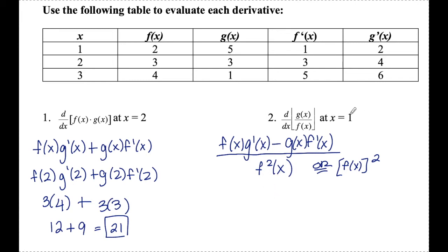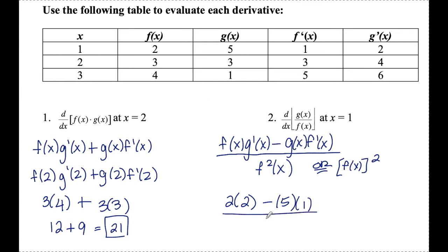Since I'm looking for these at x equals 1, I'm plugging 1 in for x everywhere. f of 1 is 2, g prime of 1 is also 2, g of 1 is 5, f prime of 1 is 1, and f of 1 is 2 — and I'm squaring that, so 2 squared. 2 times 2 is 4 minus 5 over 4, so I end up with negative one-fourth for number two.